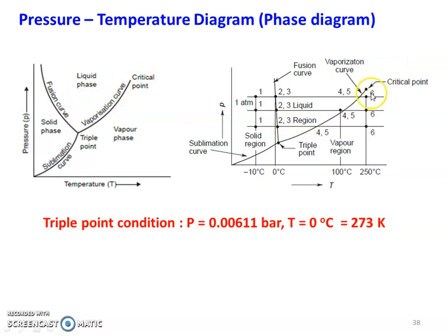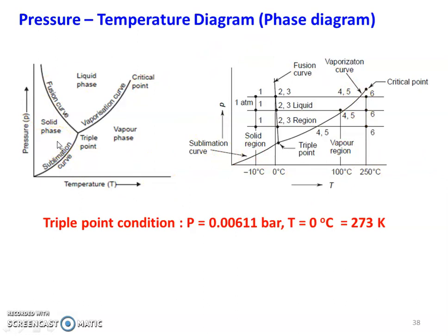The critical point is the final point of the vaporization curve. Along a constant pressure line: 1 to 2 is heating of ice, 2 to 3 is melting of ice into liquid, 3 to 4 is vaporization — converting liquid into vapor, 4 to 5 is the liquid converted into vapor, and 5 to 6 is the superheating region. The pressure-temperature diagram, or phase diagram, represents all three phases.